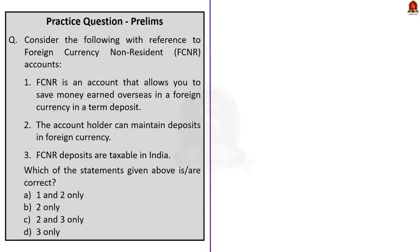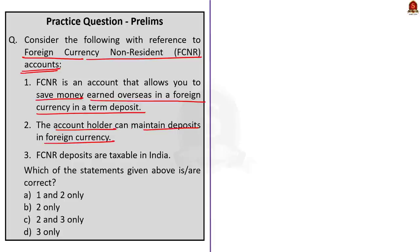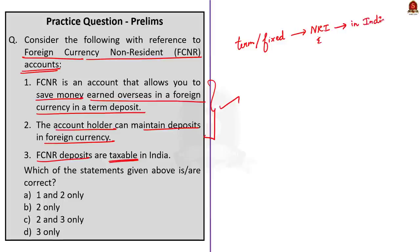Fourth question: consider the following statements regarding foreign currency non-resident accounts. Statement 1 — FCNR is an account that allows you to save money earned overseas in a foreign currency in a term deposit. Statement 2 — the account holder can maintain deposits in foreign currency. Statement 3 — FCNR deposits are taxable in India. Statements 1 and 2 are correct — FCNR is a term or fixed deposit account held by NRI in India in foreign currency, and since it is maintained in foreign currency, it is not prone to exchange rate risk. Statement 3 is incorrect — FCNR deposits are not taxable in India. The correct answer is option A, 1 and 2 only.